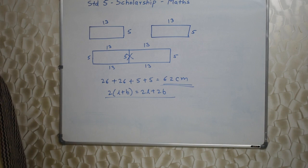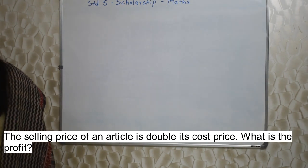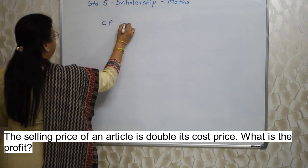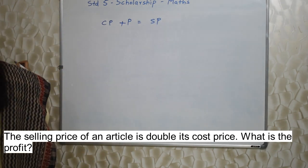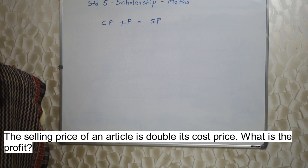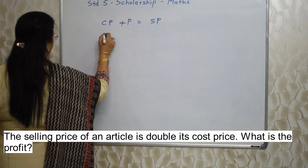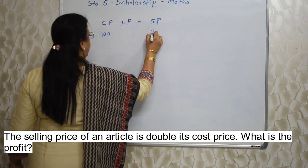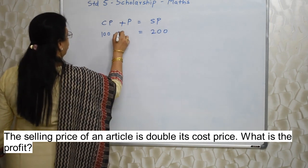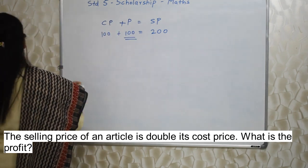Next sum: The selling price of an article is double its cost price. What is the profit? We know the formula: CP plus profit equals SP. Here, if the CP is 100, then SP is 200 — because we are adding a profit of 100. That is how it has gone up to 200.